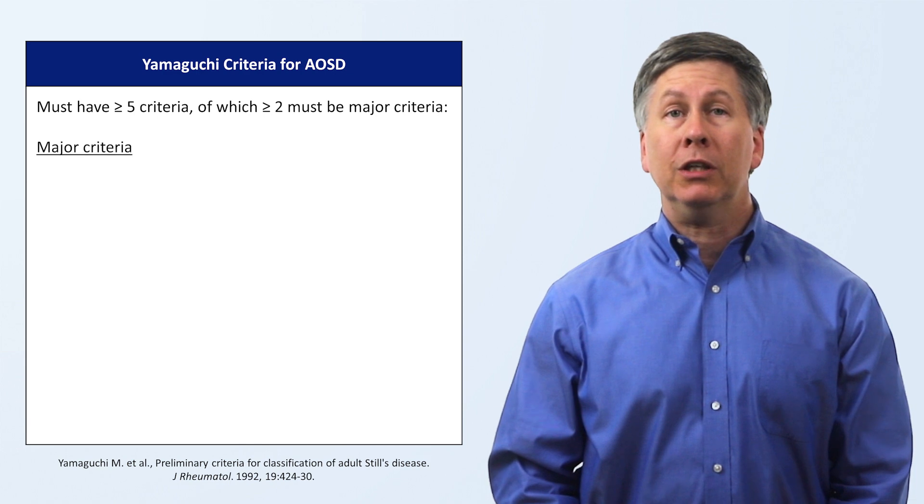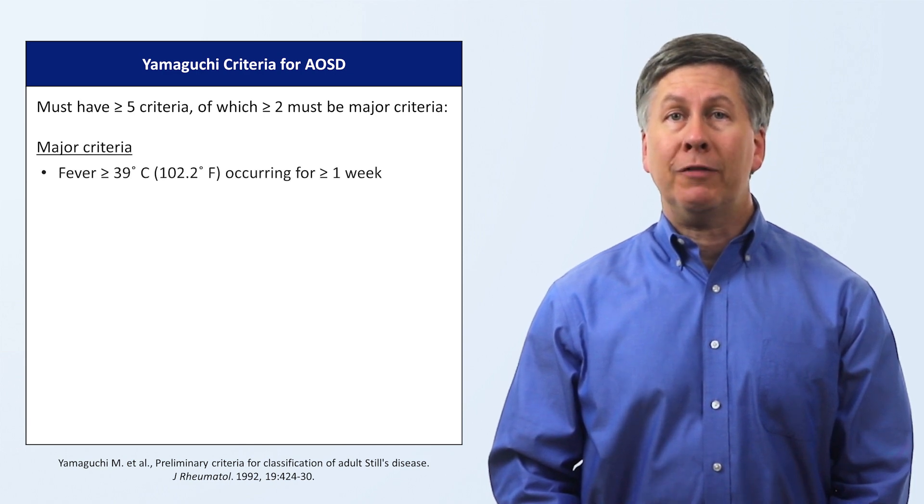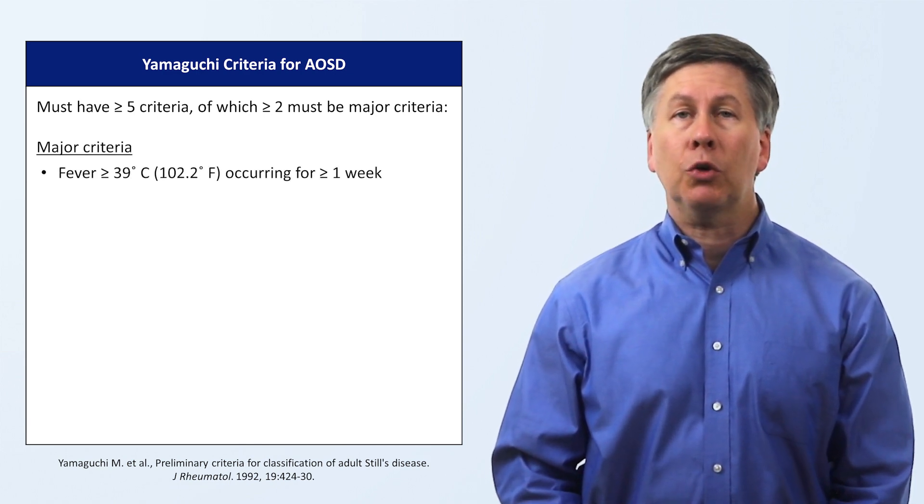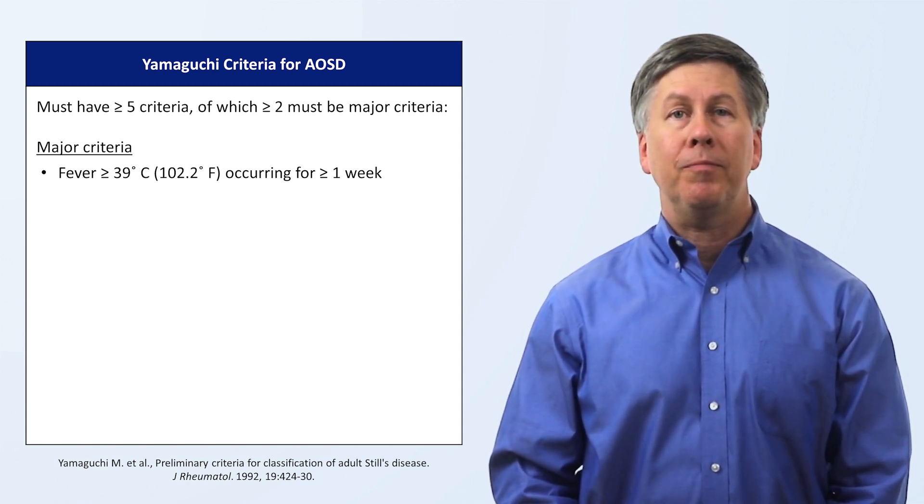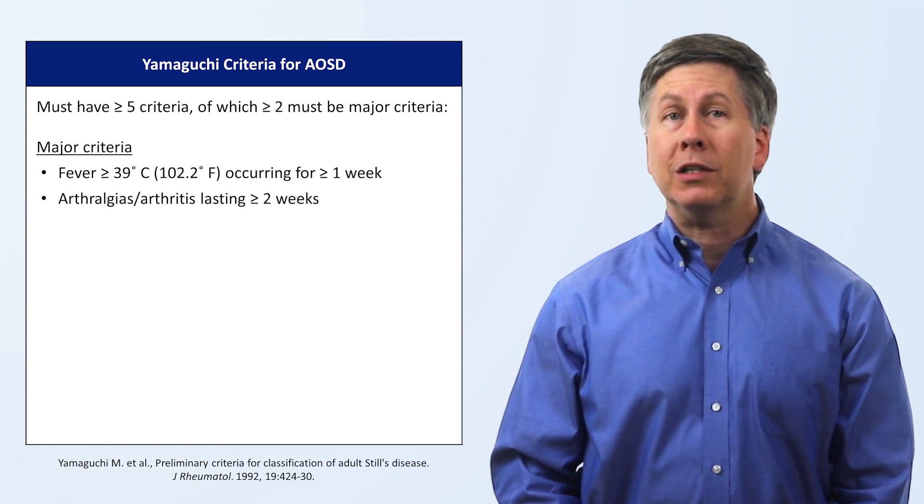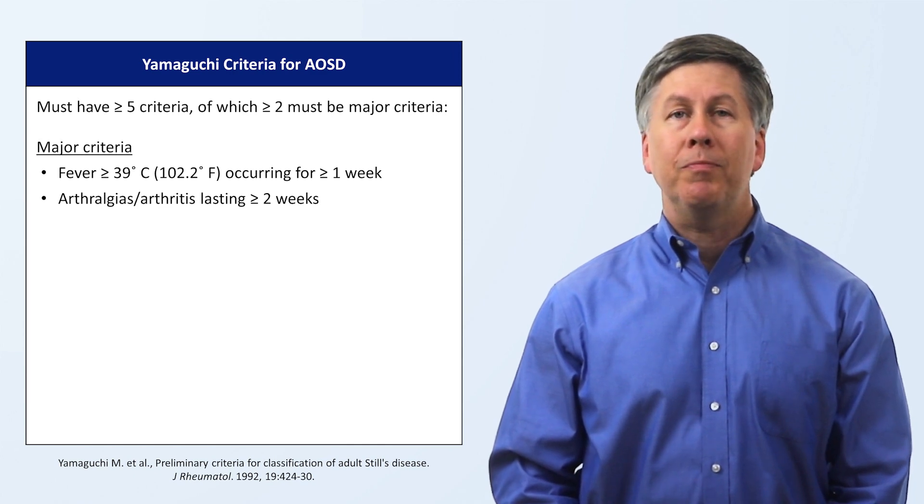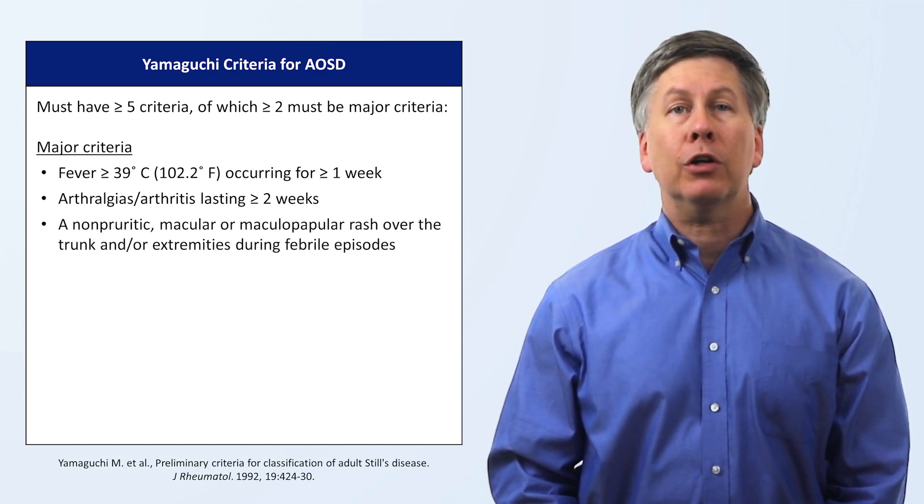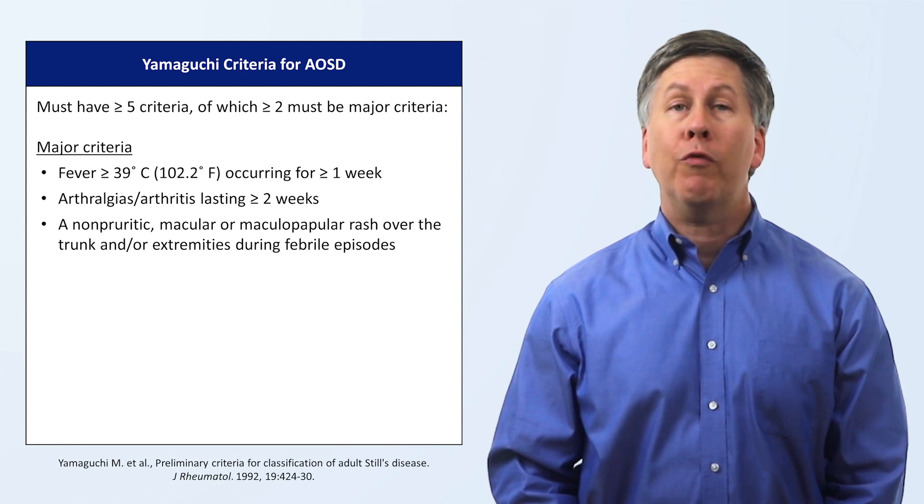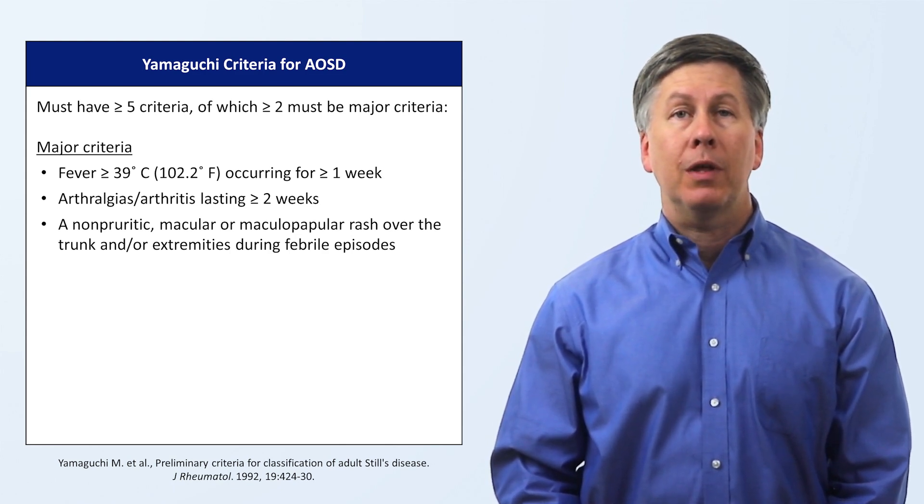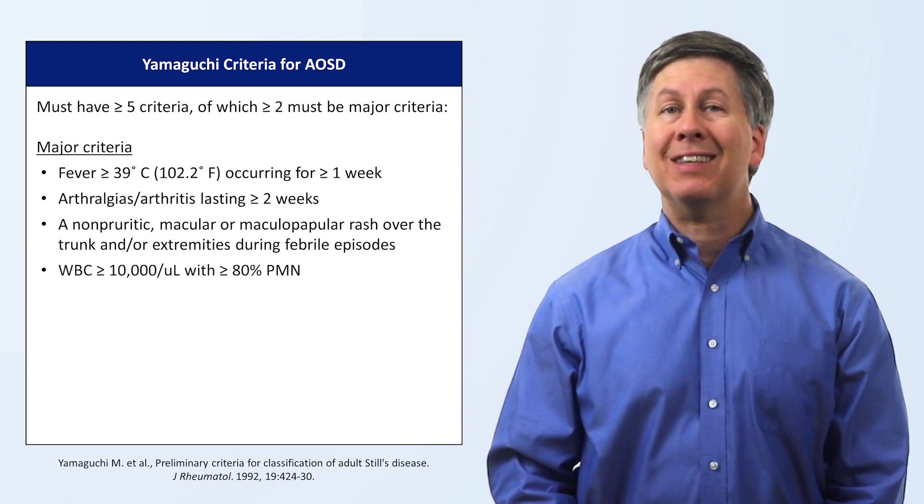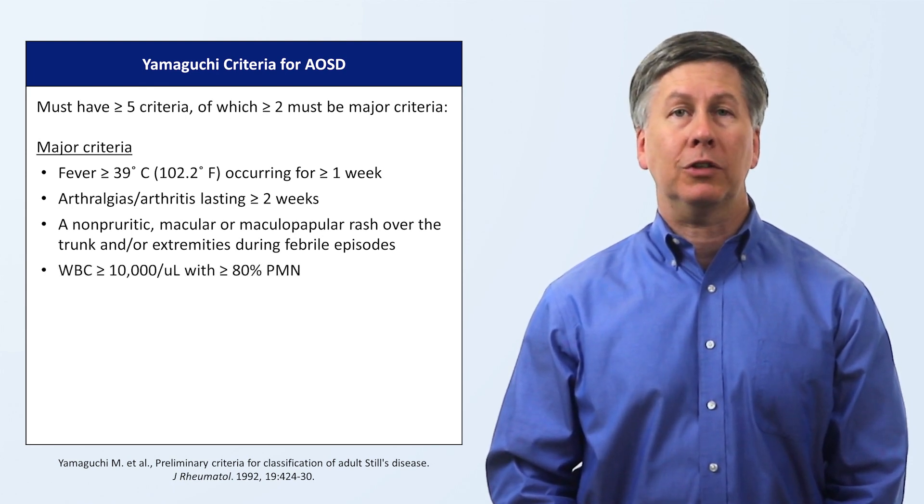The major criteria includes recurrent fever of at least 39 degrees Celsius or 102.2 Fahrenheit, occurring over the course of at least one week. Arthralgias or arthritis lasting at least two weeks. A non-pruritic macular or maculopapular rash over the trunk and or extremities during febrile episodes. And a white blood cell count of at least 10,000 with at least 80% neutrophils.